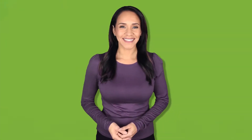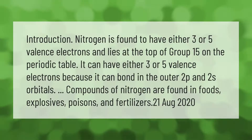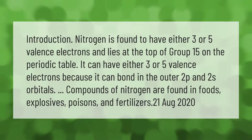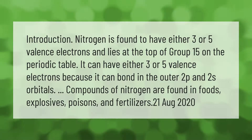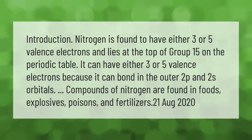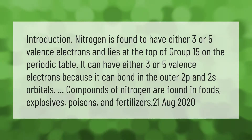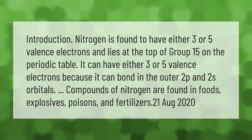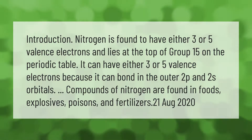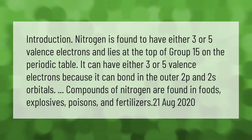Introduction: Nitrogen is found to have either three or five valence electrons and lies at the top of Group 15 on the periodic table. It can bond in the outer 2p and 2s orbitals. Compounds of nitrogen are found in foods, explosives, poisons, and fertilizers.